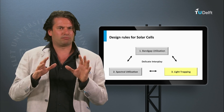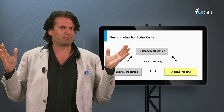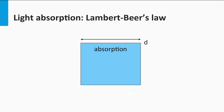Let's start with absorption. How does absorption work? Let's consider the simple system of a single absorbing medium with a thickness d. From the left we have a light ray which is coupled into the film in the x direction. Part of the light is absorbed in the film. We define x equals 0 to be the front side of the medium and x equals d to be the back side of the medium.